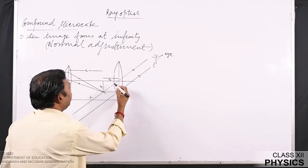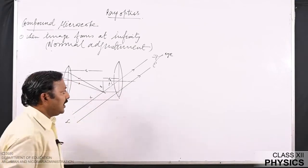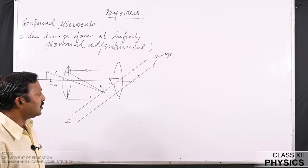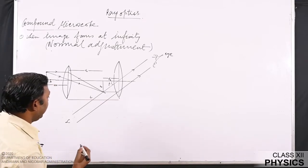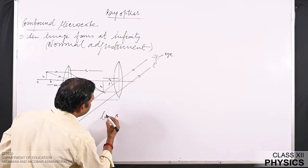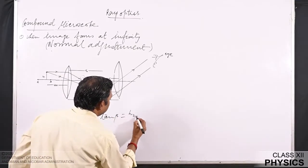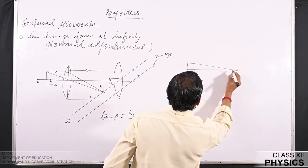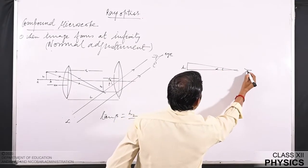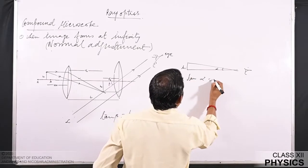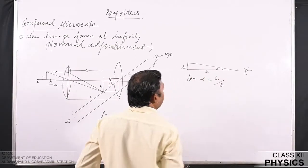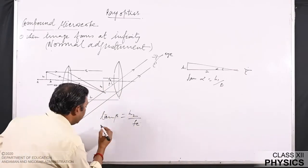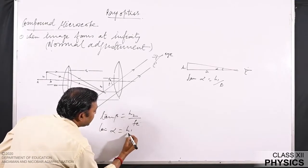Magnification is given by the angle subtended at the eye due to the presence of the optical instrument, divided by the angle subtended at the eye in the absence of the optical instrument. From the figure, tan β = h2/d. We know that tan α = h1/d, since a person can see the image when it forms at the distance of distinct vision.